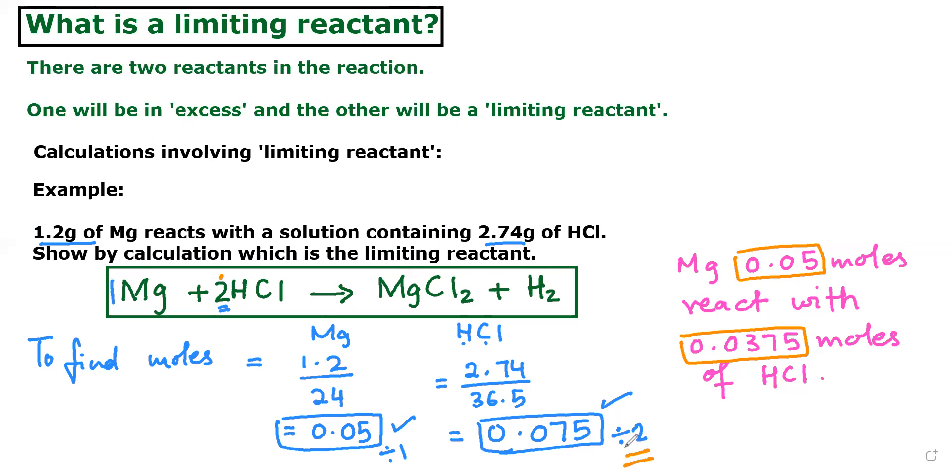So these moles need to be divided into 2. So for each mole there will be 0.0375. So it means 0.0375 is less, so it means this is going to be the limiting reactant. I write here LR, okay, limiting reactant.